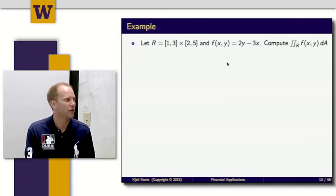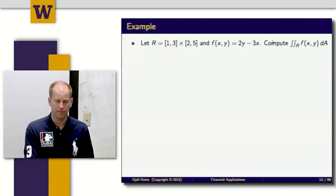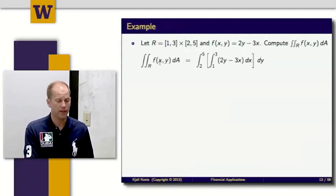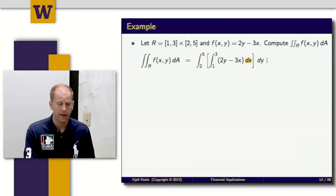So one of the things I like to do when I have a theorem like that is just test it out. So let's try an example and see what happens. I'm going to define the rectangle to be [1,3] × [2,5]. So this is just in between 1 and 3 on the x-axis and in between 2 and 5 on the y-axis. My function will be 2y - 3x. And I want to compute the double integral over that rectangle.